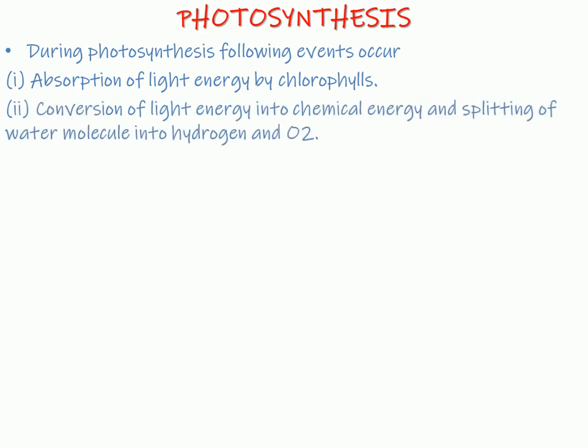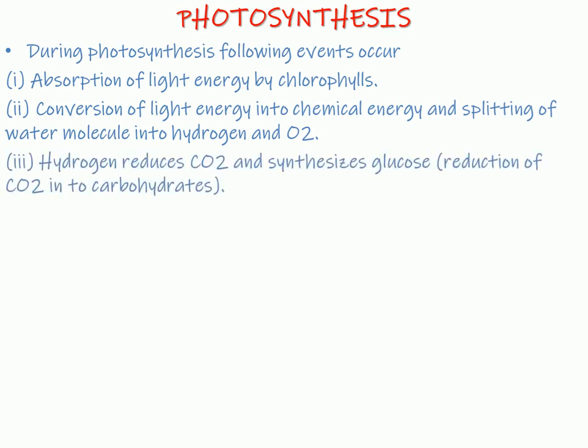Second is conversion of light energy into chemical energy and splitting of water molecules into hydrogen and oxygen. The water that is being absorbed by the roots is splitted into hydrogen molecule and oxygen molecule. Third step: the hydrogen produced through the splitting of water reduces the carbon dioxide and synthesizes glucose, that is reduction of carbon dioxide into carbohydrates.